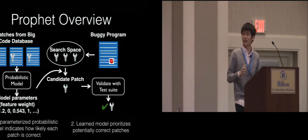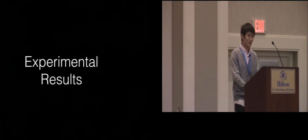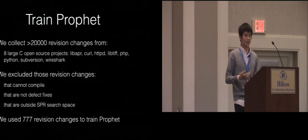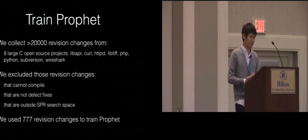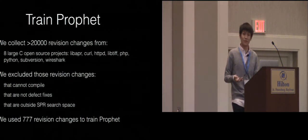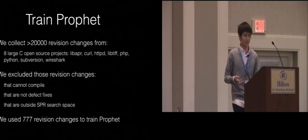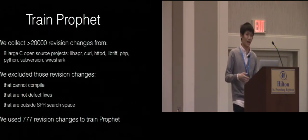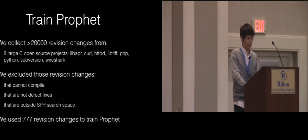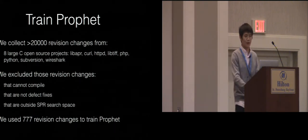This is how Profit works at a high level. For training, we collected more than 20,000 revision changes from eight large C open-source projects. We excluded revision changes that cannot compile (since we need to parse the AST tree), those that are not defect fixes, or those outside Profit's search space. In the end, we used more than 700 revision changes to train Profit. The total training time is less than two hours.